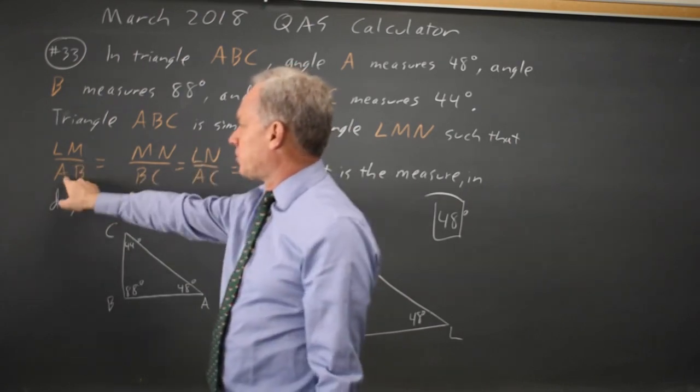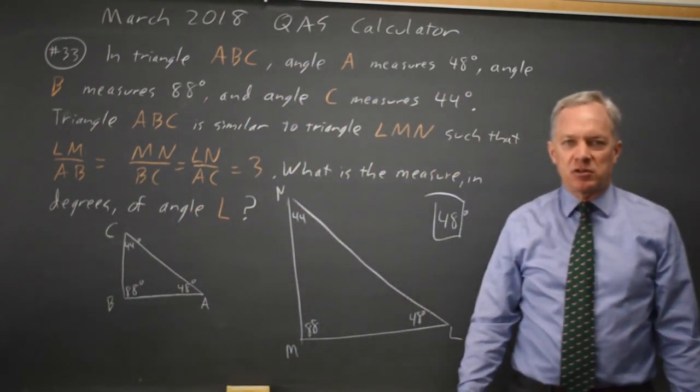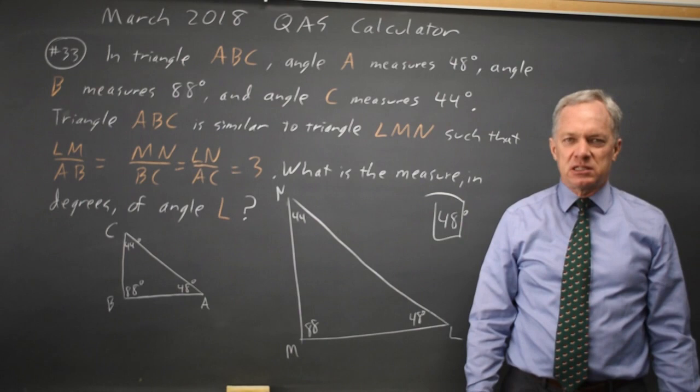LM over AC. LM over AB. L is corresponding with A. So the measure of angle L corresponds with the measure of angle A in these similar triangles.